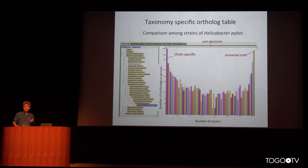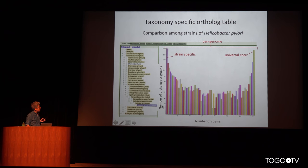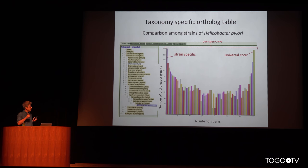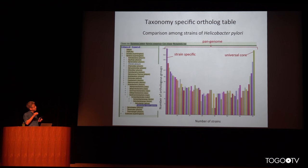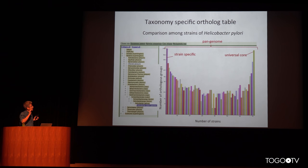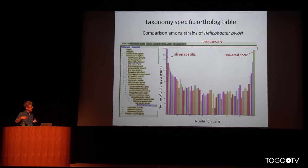In addition to this table, we also provide taxonomy-specific ortholog tables for each taxon. Users can choose any taxon and see the ortholog table specific to that taxon. In this case, I show the strains of Helicobacter pylori. This kind of comparison is increasingly important because the number of genomic sequences available is growing rapidly.